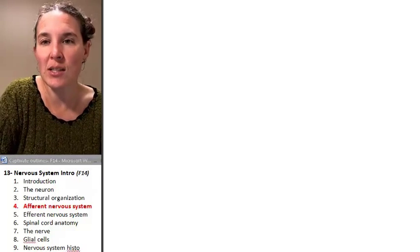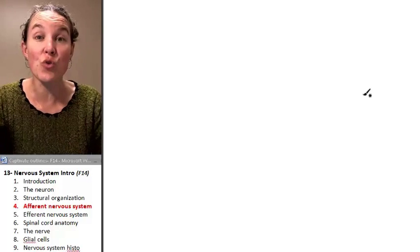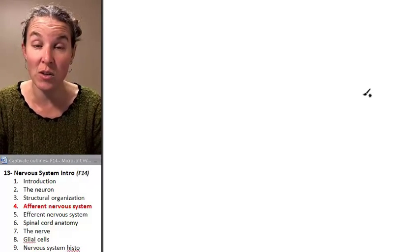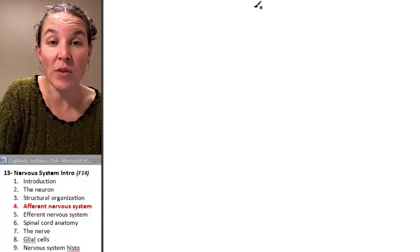You just learned that there are different structural divisions of the nervous system. We have the central nervous system, and we have the peripheral nervous system.